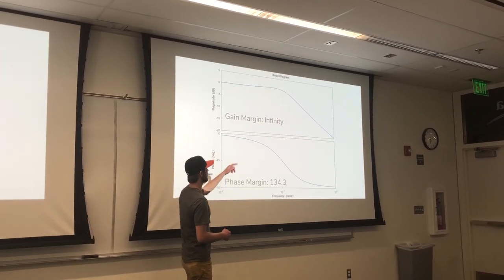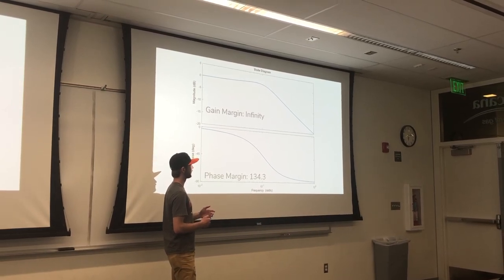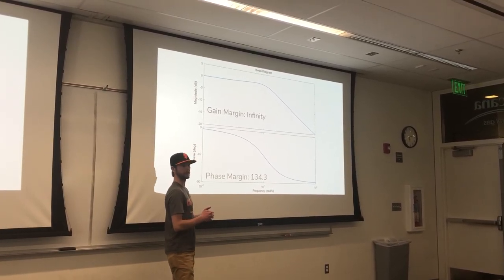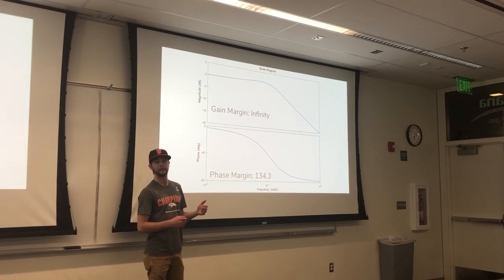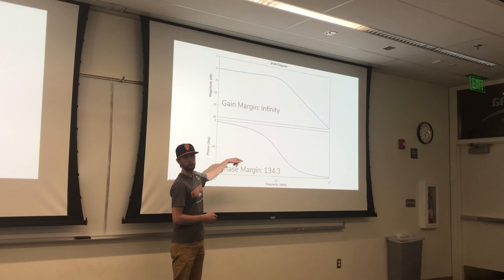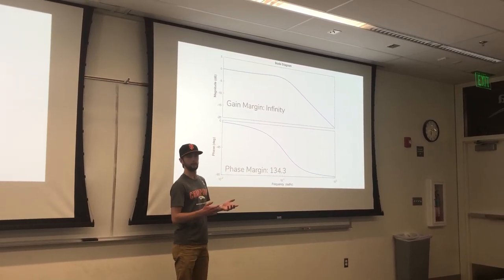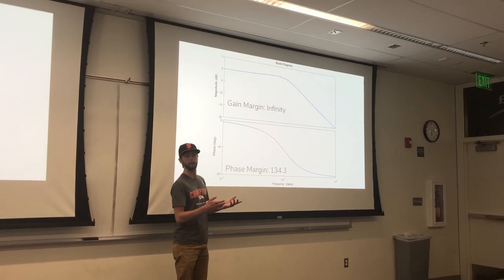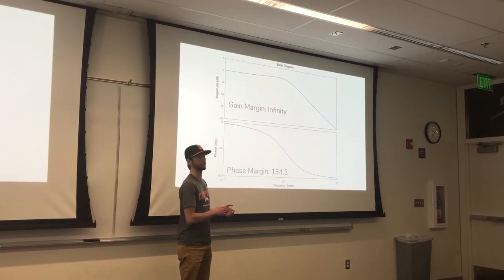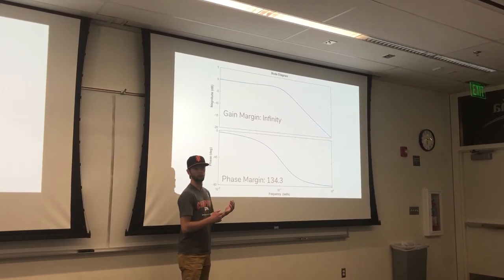We found that the phase margin of this system was 134.3 degrees. The crossover frequency, the phase is 45.7 degrees at this time. So 180 minus that is 134.3 degrees.